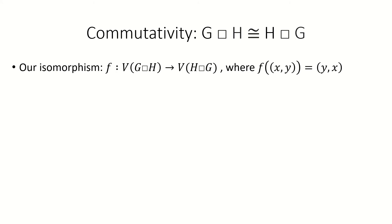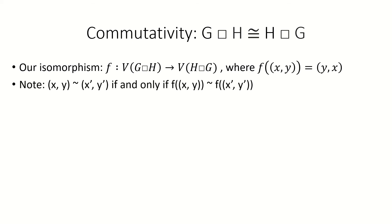Moving on to our first property, the Cartesian product is commutative up to isomorphism. We can define a function f that maps each vertex xy in the Cartesian product gh to the vertex yx in the Cartesian product hg. It's straightforward to show that this function is a bijection. The last requirement for this to be a graph isomorphism is also satisfied — that is, two vertices xy and x prime y prime are adjacent in gh if and only if their images are adjacent in hg.